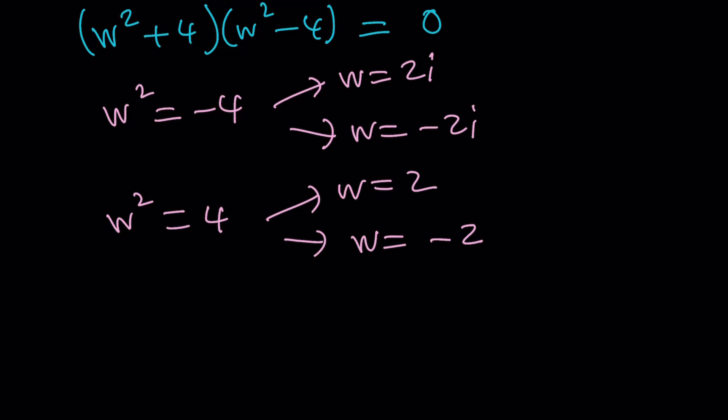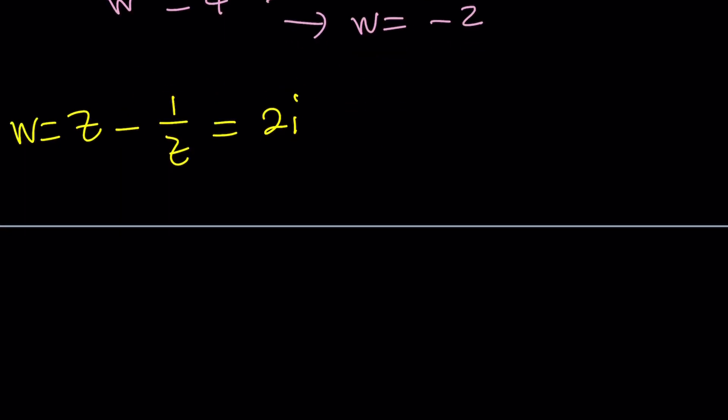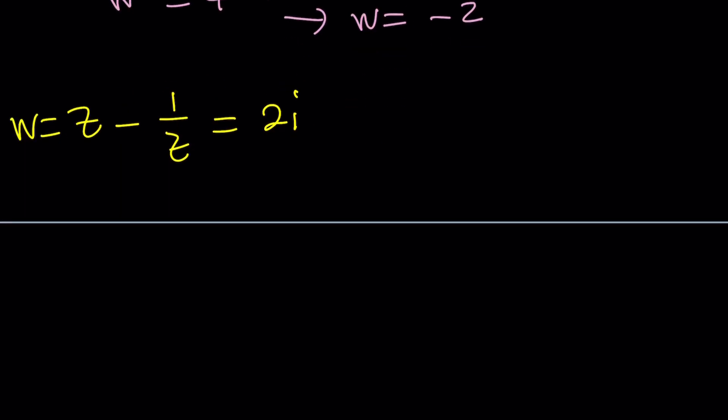And then W, we need to back substitute. Let's take one of these solutions, for example, 2i. Set W equal to z minus 1 over z, and that equals 2i. How do we solve this equation? I'll multiply everything by z. Z squared minus 1 equals 2iz. Let's put everything on the same side and make this a full quadratic.